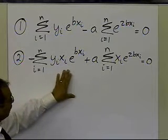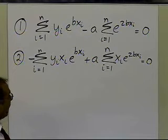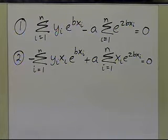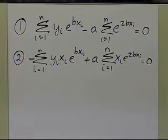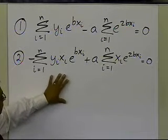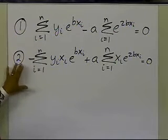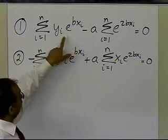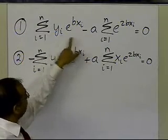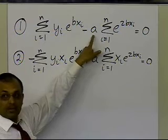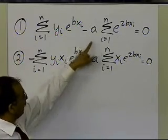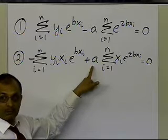With two simultaneous nonlinear equations, there are several possibilities: no solution, a unique solution, a finite number of solutions, or infinitely many solutions. The good news is that in the first equation, `a` appears only once, so I can write `a` explicitly in terms of `b`, and then substitute that expression back into the second equation.